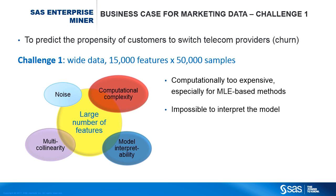Second, the problem of model interpretability — in other words, insights into the relationship between inputs and responses — can be as important as prediction accuracy in some areas, like clinical trials, risk management, etc. Model complexity increases with the number of inputs, so interpretability is sacrificed.